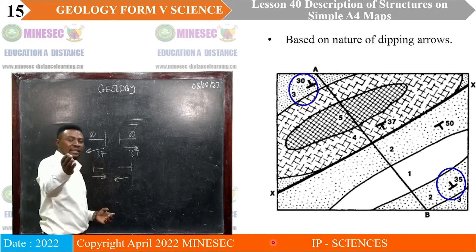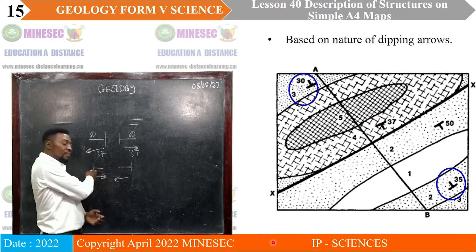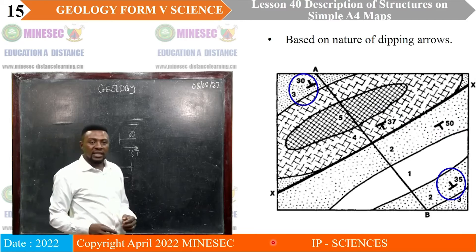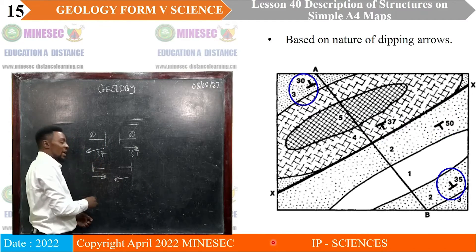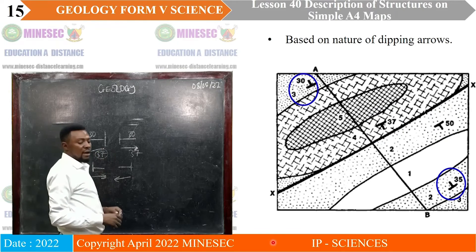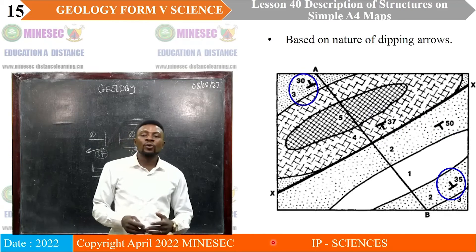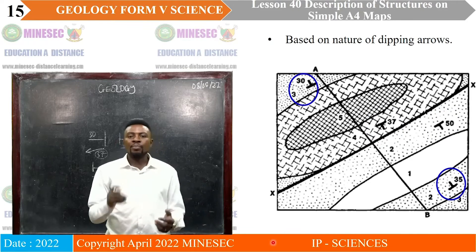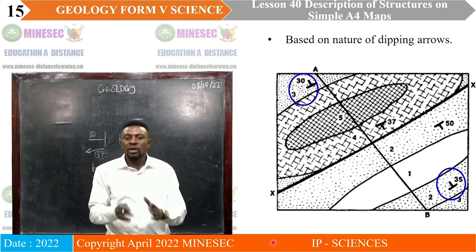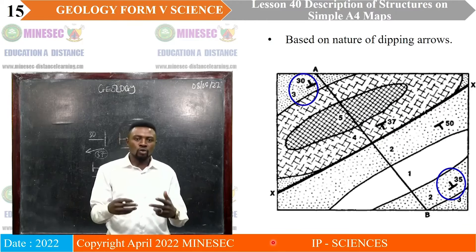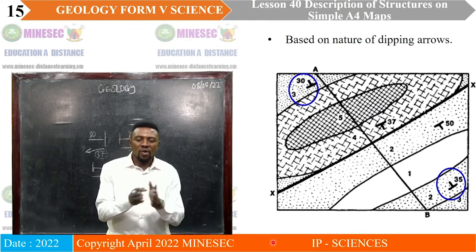Take note: in some maps you have the full dip symbol showing both dip direction and strike, and in other maps you may have just the arrow for the dip direction with a value representing the amount of dip. All of that will help you in describing the fold. So that is how you recognize a fold in a map — based on regular repetition of strata around a core bed, and using dip arrows pointing towards or away from each other on beds.